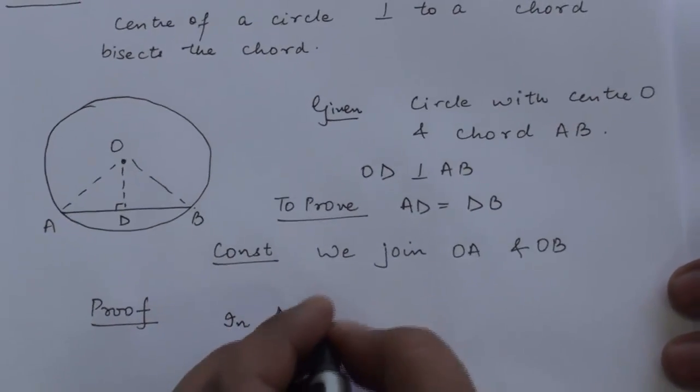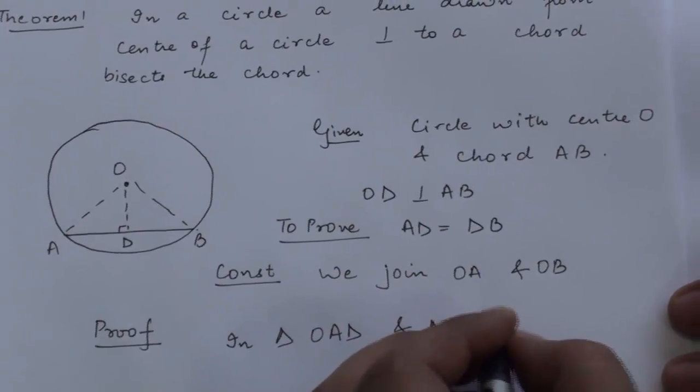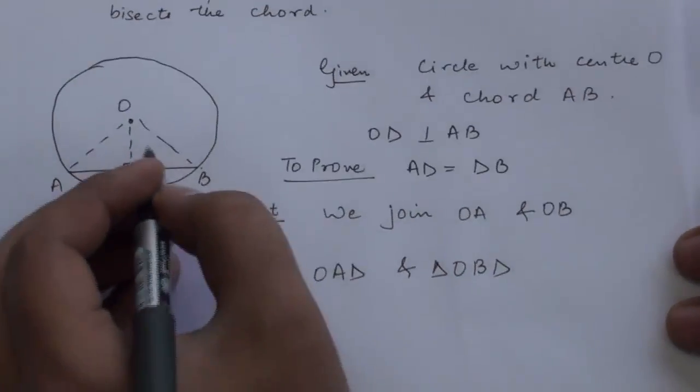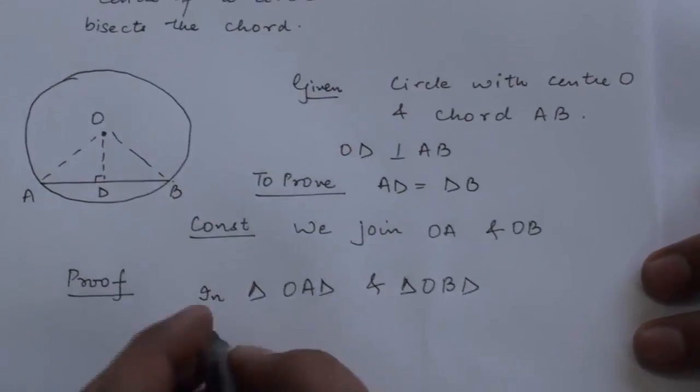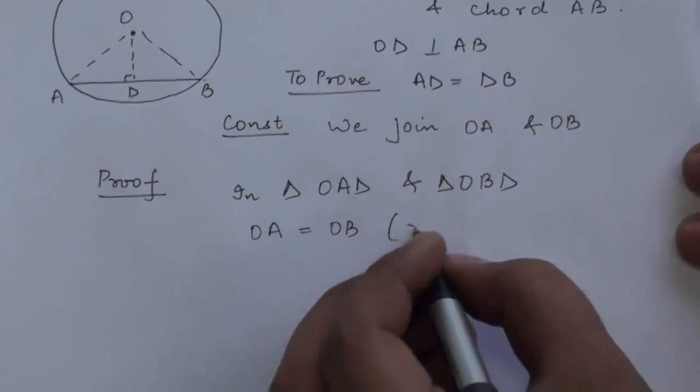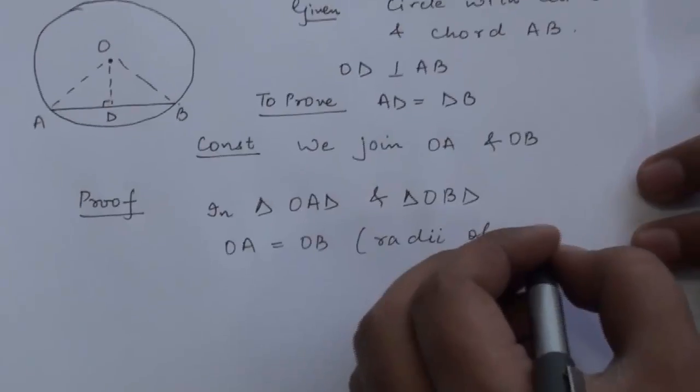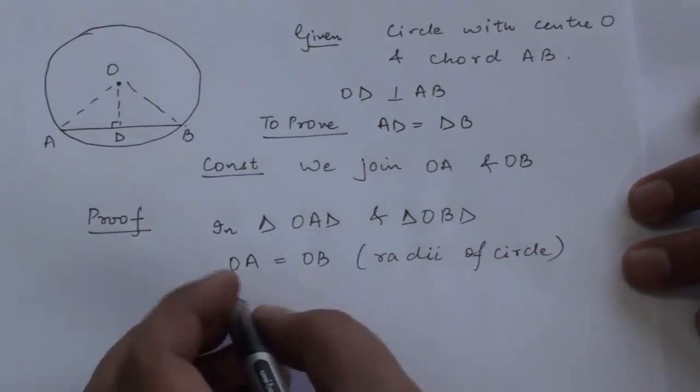In triangle OAD and triangle OBD, these two triangles, we have: OA is equal to OB. These are the radii of the circle.